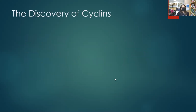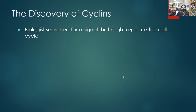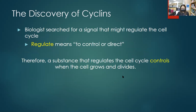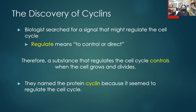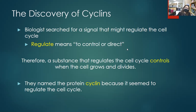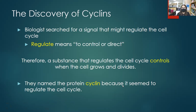The discovery of cyclins: biologists are trying to figure out the stop-and-go mechanism that regulates the cell cycle. There are proteins called cyclins that allow the cell cycle to move on in stages. Think of them like shifting gears in a standard transmission — as soon as we finish G1 and all our growth, we shift into the next gear and go into synthesis; as soon as synthesis is done, we shift into G2. If we figure out these cyclins, we could get cancerous cells to stop.